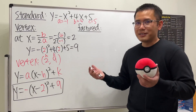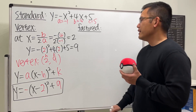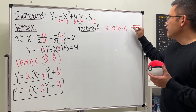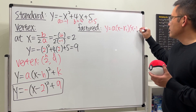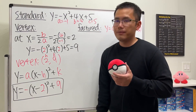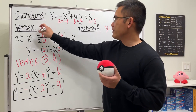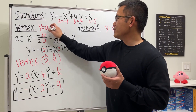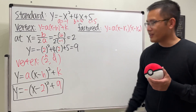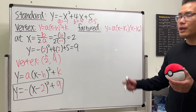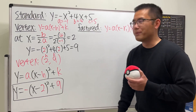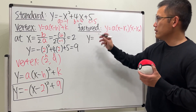Now let's look at the factored form. The factored form looks like y equals a times (x minus r1) times (x minus r2), where the expression is factored out and we have the same a value. To do this, we go ahead and factor the original equation in standard form.